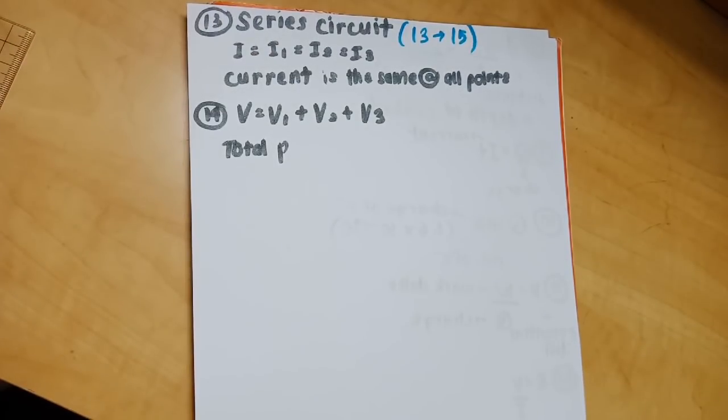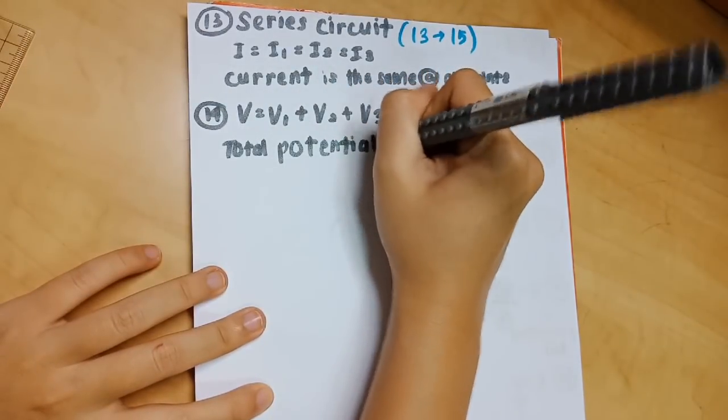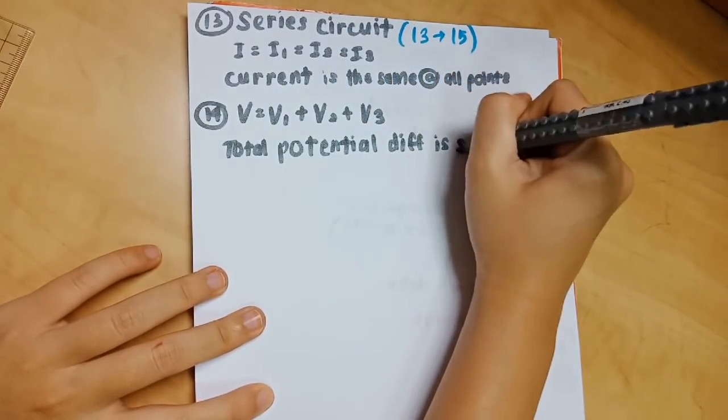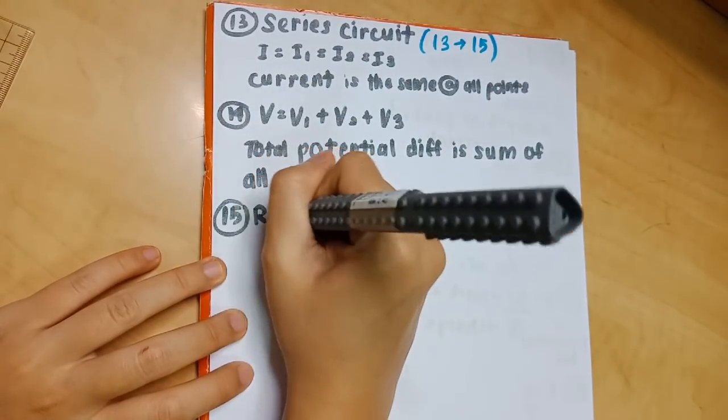Number 14 is still on the series circuit: v equals v1 plus v2 plus v3. The total potential difference of the circuit is the sum of all individual potential differences.